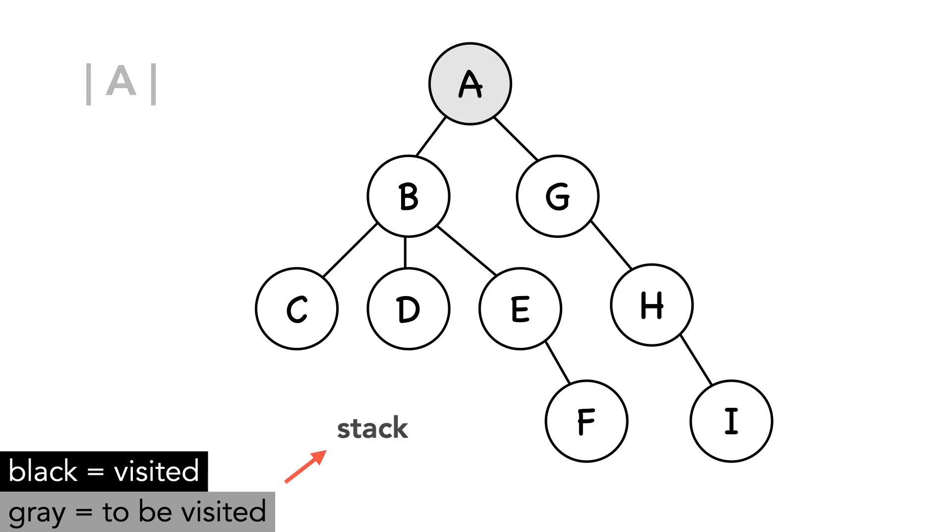Starting our algorithm, A is the first node we'll visit. We'll keep track of the stack in the top left corner. We pop A from the stack and mark it visited. We also add its adjacent nodes into the stack. I'm adding the rightmost node first because I think it's easier to follow visually if we go left to right.